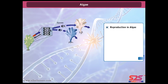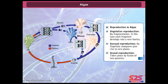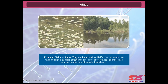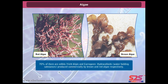Reproduction in algae: Vegetative reproduction occurs by fragmentation, where each fragment develops into a new thallus. Asexual reproduction occurs by flagellate zoospores, which give rise to new plants. Sexual reproduction takes place by fusion of two gametes. Economically, algae are important as half of the carbon dioxide fixed on earth is from algae through photosynthesis, and they are primary producers in all aquatic food chains. Algae yield algin and carrageen, which are hydrocolloids produced commercially by brown and red algae respectively.